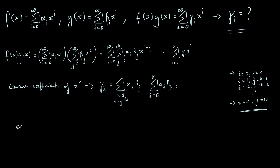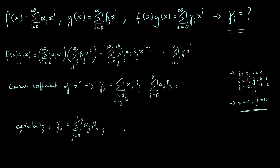So equivalently, let's write this using slightly different indices. Relabeling so that k becomes i and i becomes j, we get that γ_i is the sum where j goes from 0 to i of α_j·β_{i−j}. So there we've expressed the coefficients γ_i in terms of the α's and β's.